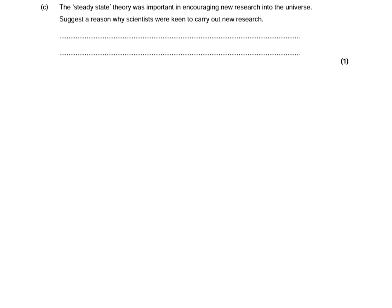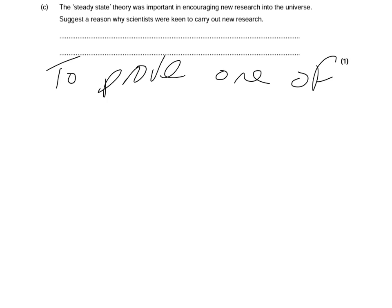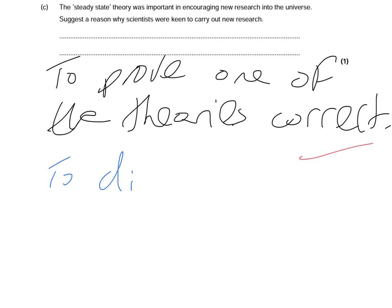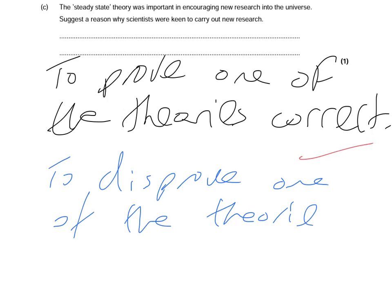The next part of the question says the Steady State Theory is important in encouraging new research into the universe. It asks you to suggest a reason why scientists were keen to carry out new research. The reason is that scientists were basically being paid to support either one of the theories, so they wanted to find evidence to prove that their theory is correct. Alternatively, you could say it was encouraging research to disprove one of the theories — and that would also get you a mark.